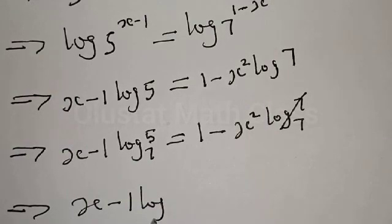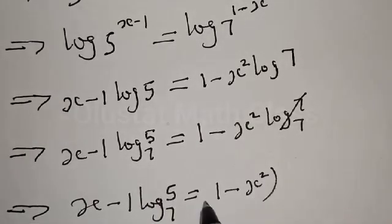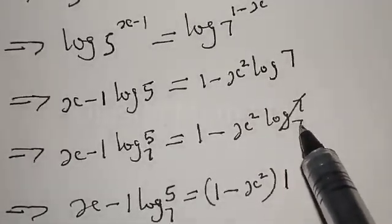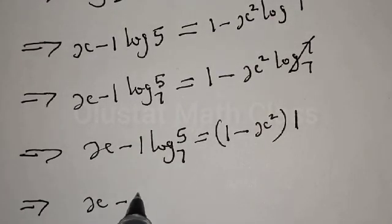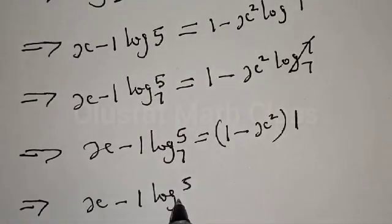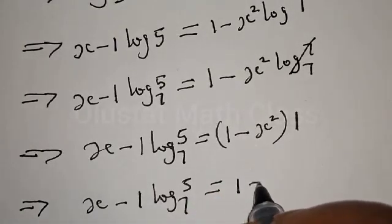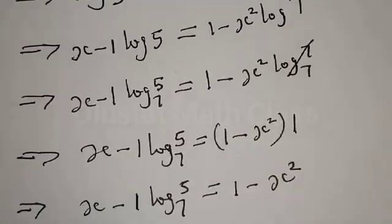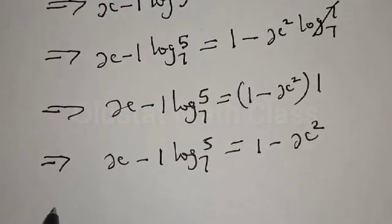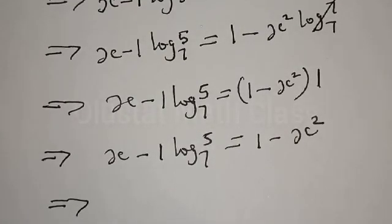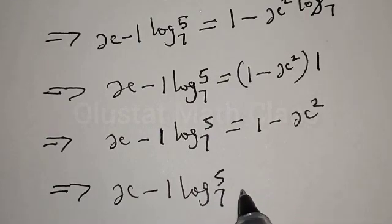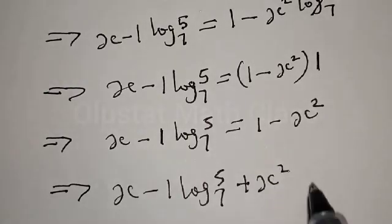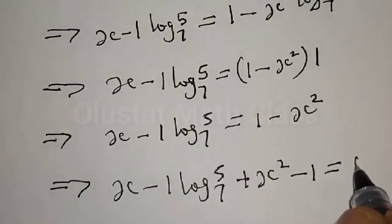This implies that we have x minus 1 times log 5 base 7 to be equal to 1 minus x squared, because log 7 base 7 is 1. Then opening the bracket we have 1 minus x squared. This implies that let's equate it to zero: we have x minus 1 times log 5 base 7 plus x squared minus 1 is equal to zero.